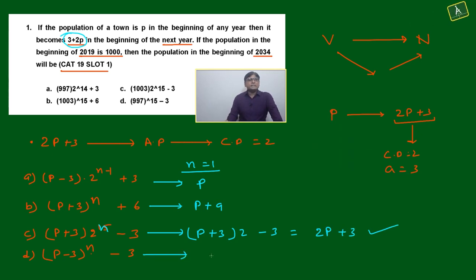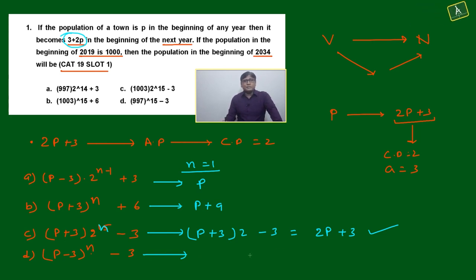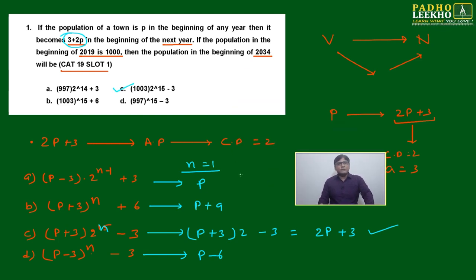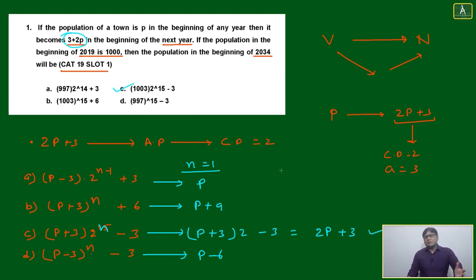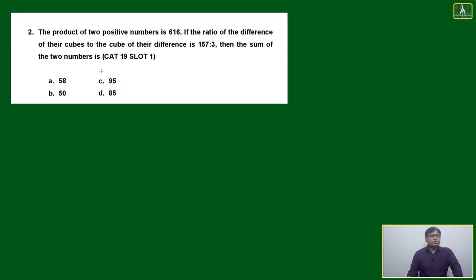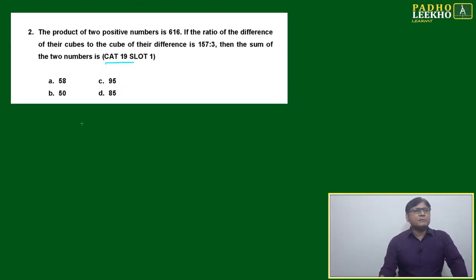Check if any other option also gives 2P plus 3. If option D also does, put n equal to 2. We can mark option C — C for Calcutta — as the correct choice. This is a simple method; it's a moderate question, not tough. Now question number 2, also from CAT 2019 paper slot 1.